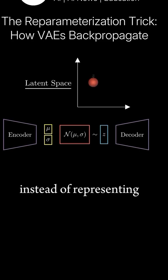Instead of representing our image as a single point in the latent space, it's represented as a Gaussian distribution. From this latent distribution, we sample points at random, and the decoder converts these sampled points back into the input space.